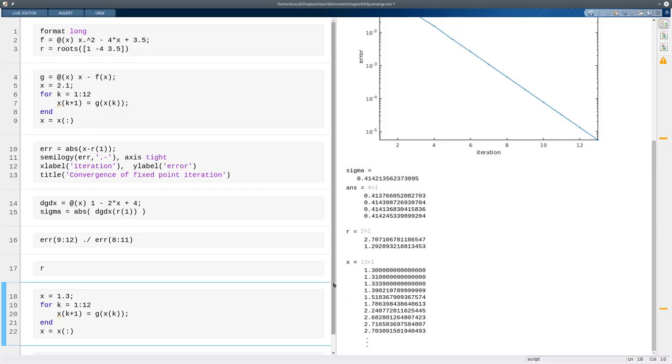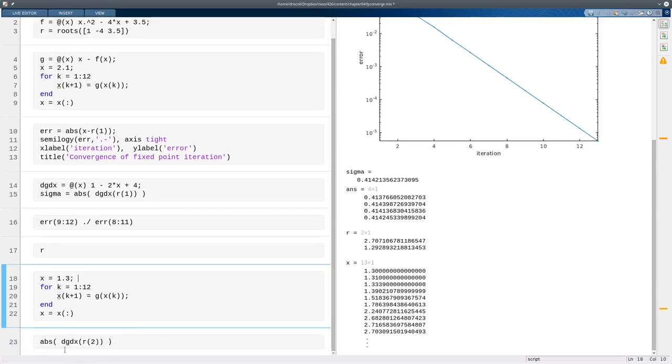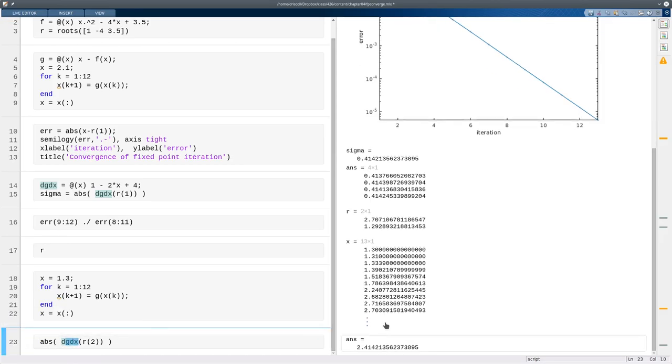And again, this is not very mysterious. It's just because when we evaluate the derivative of g at this fixed point, we find that in magnitude it's greater than 1, and so there can be no convergence for the fixed point iteration.